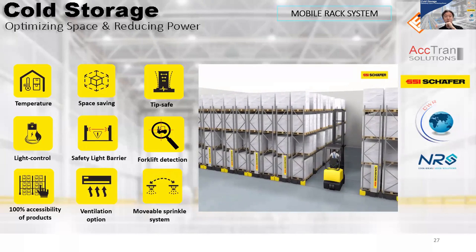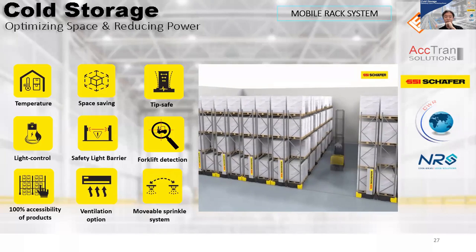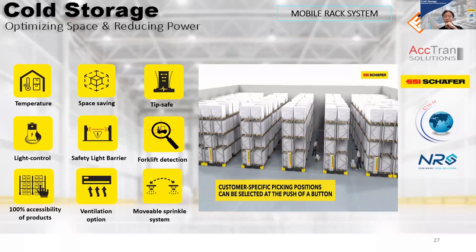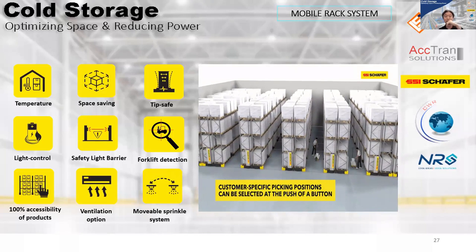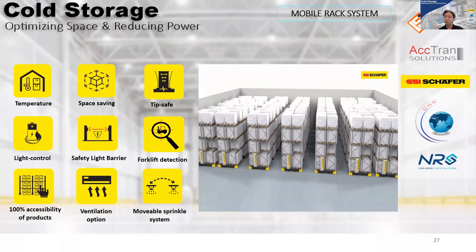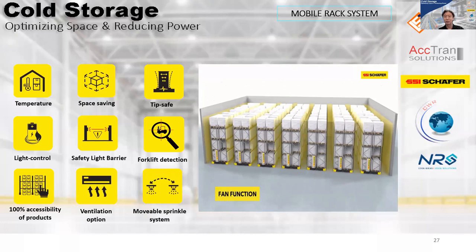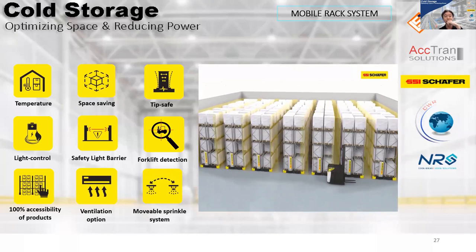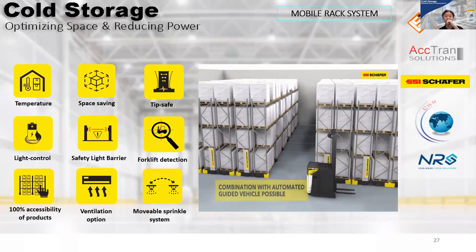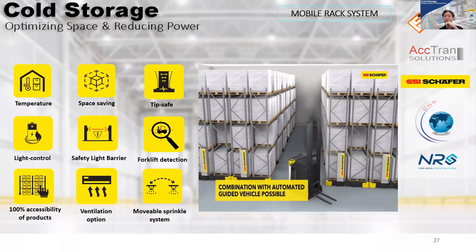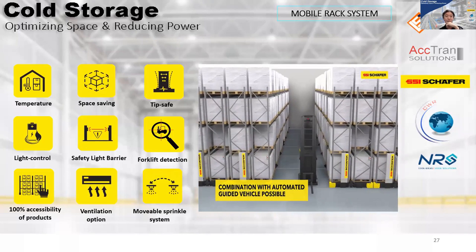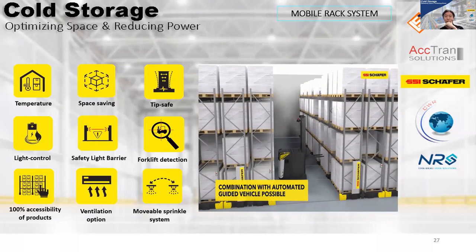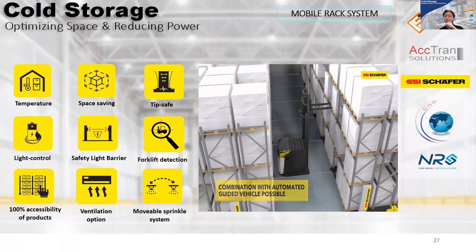Mobile racking can be combined with a movable sprinkler system to ensure effective fire protection. A prefix of multiple aisles can be programmed to facilitate pallet truck access for case-picking operations — instead of opening one big aisle, you can program it to open two or three smaller aisles for case picking. Fan function can be activated during end-of-shift to improve cold air circulation. Integration with AGV is also possible, with a connection to a WMS or material flow system.